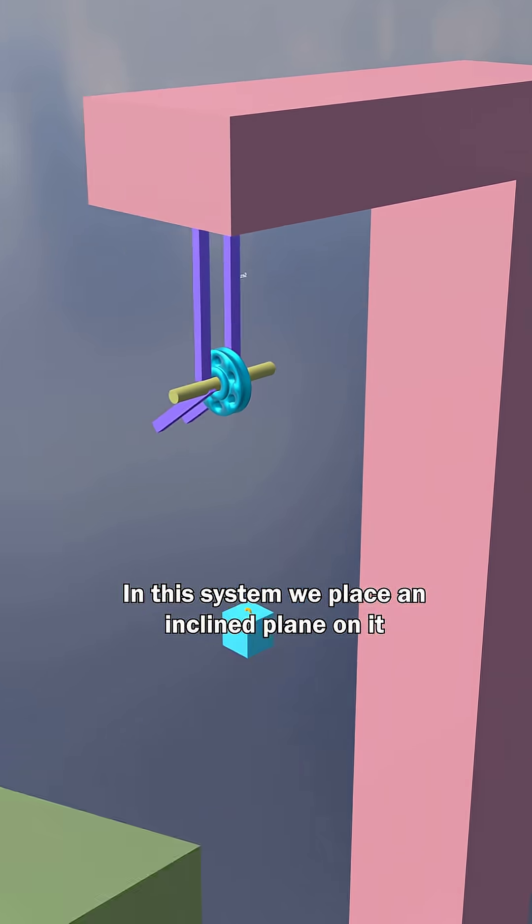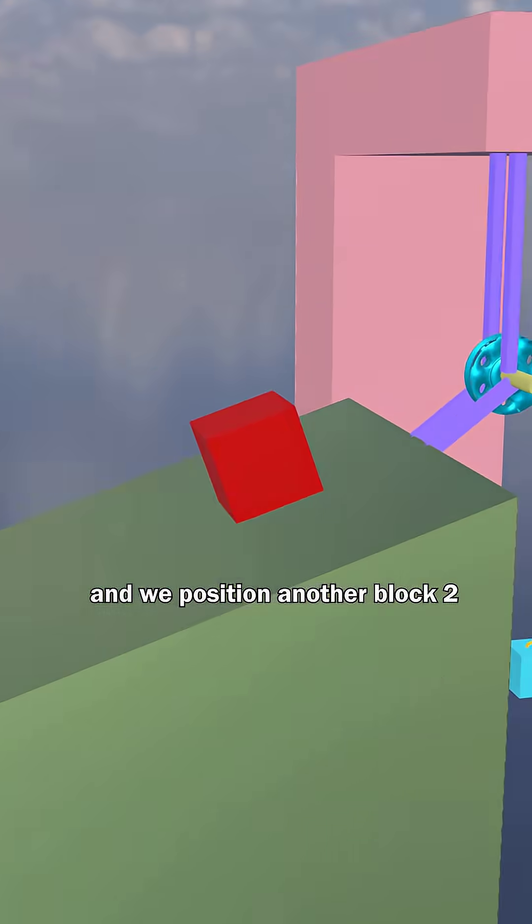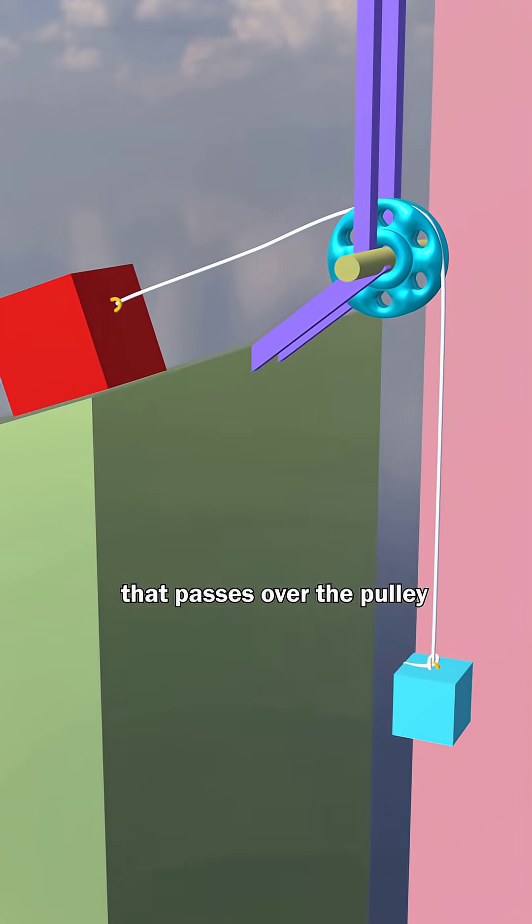In this system, we place an inclined plane on it and position another block 2. We connect both blocks using a string that passes over the pulley.